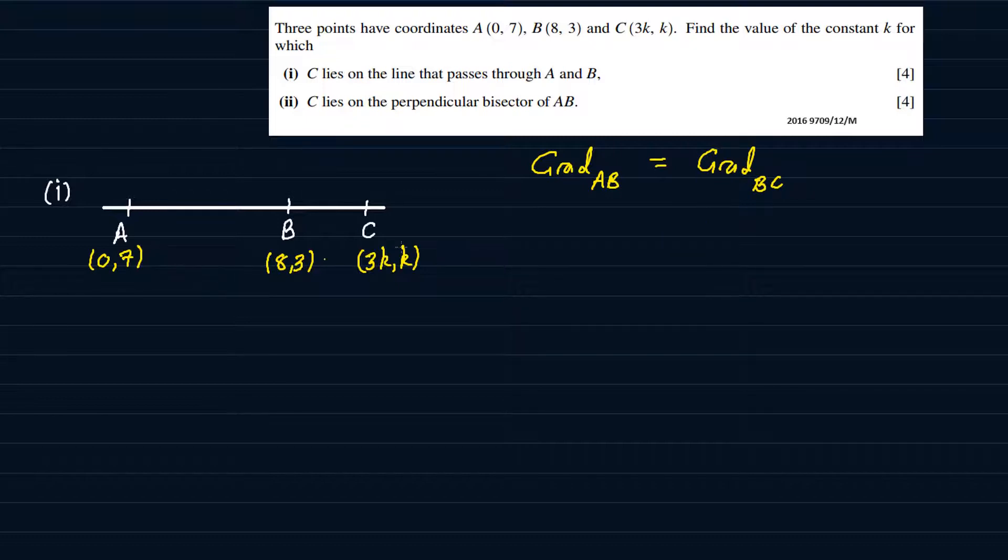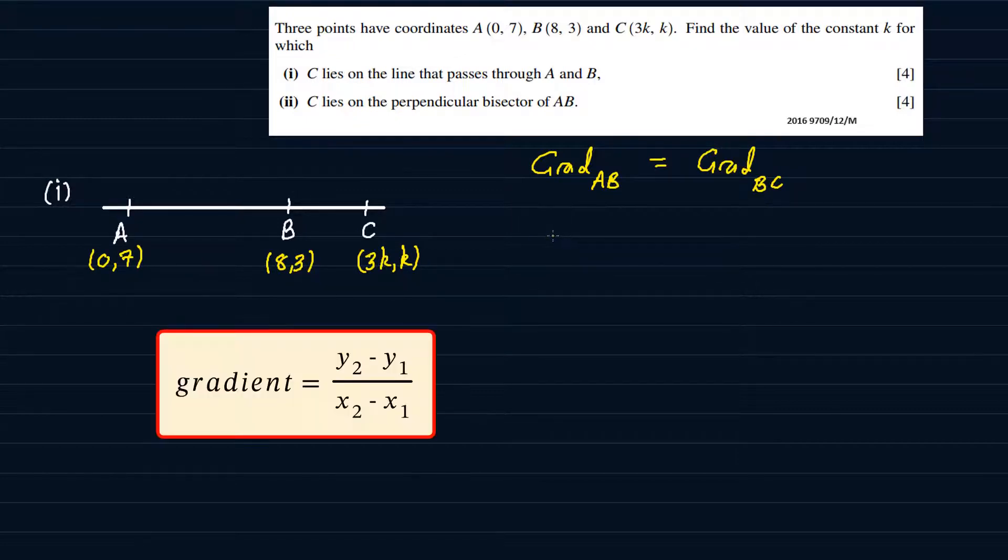So for the gradient of AB, since we have the coordinates already, we can use the change in Y over change in X. So we can go 3 minus 7, that's change in Y, divided by 8 minus 0. And this is going to give us minus 4 over 8, which is basically minus a half.